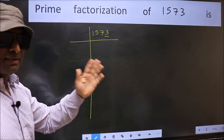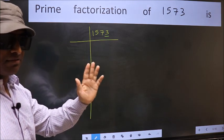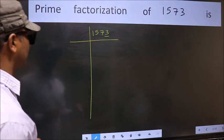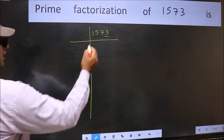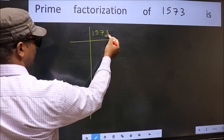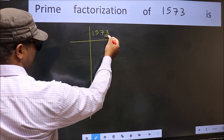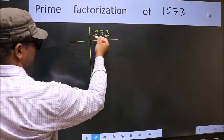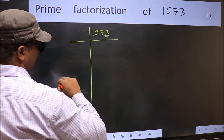Next prime number 5. The last digit is neither 0 nor 5, so this is not divisible by 5.